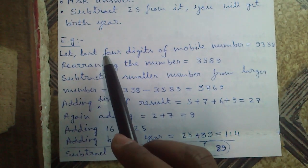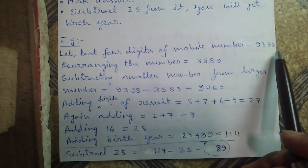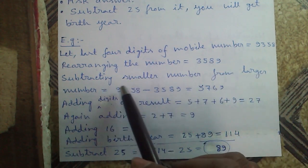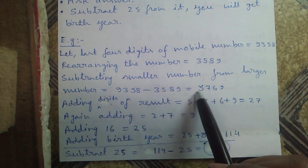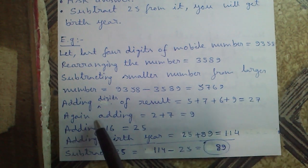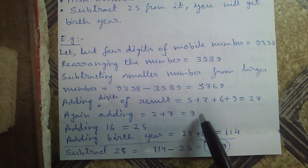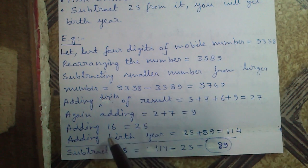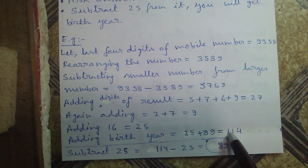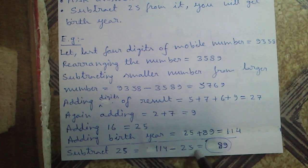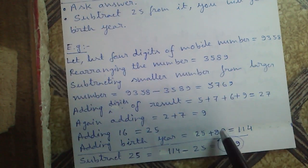Now ask the result from your partner and subtract 25 from it, and you will get the birth year. For example, say last 4 digits of mobile number is 9358. Rearrange in increasing order: 3589. Subtracting: 9358 minus 3589 equals 5769. Adding digits: 5 plus 7 plus 6 plus 9 equals 27, again 2 plus 7 equals 9 — a single digit. Add 16: equals 25. Add birth year: 25 plus 89 equals 114. Ask this result, subtract 25: 114 minus 25 equals 89. That is the original birth year.